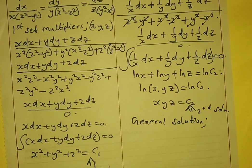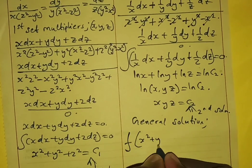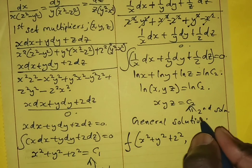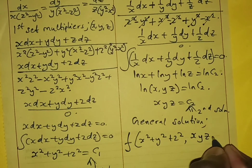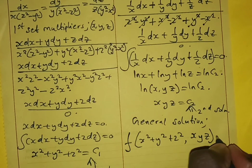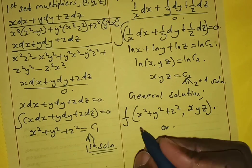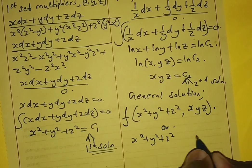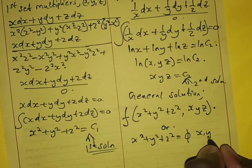To get the general solution, we write a function of our first solution x² plus y² plus z² and our second solution xyz. This can be expressed as φ(x² plus y² plus z², xyz) equals zero, or equivalently x² plus y² plus z² equals φ(xyz).